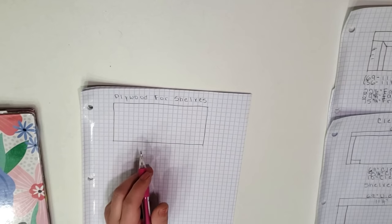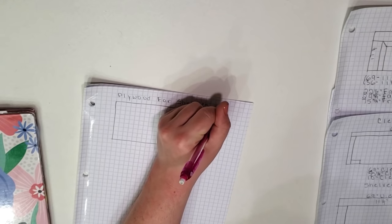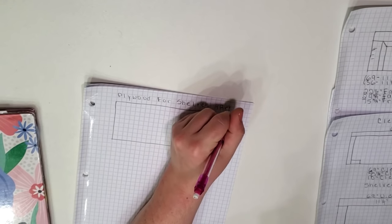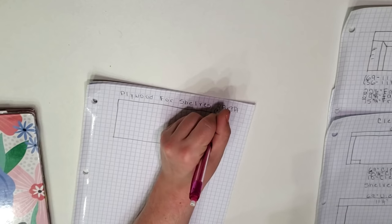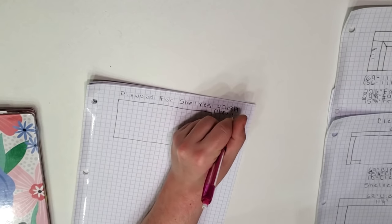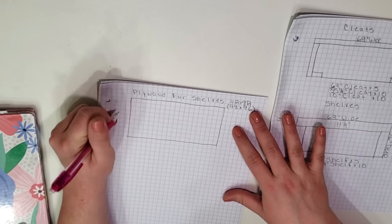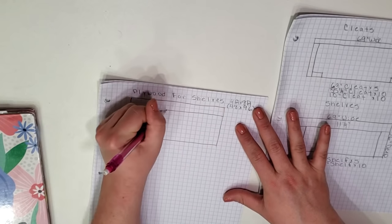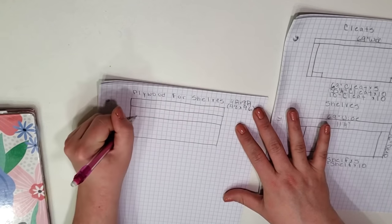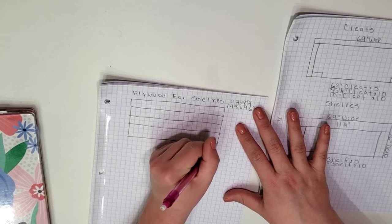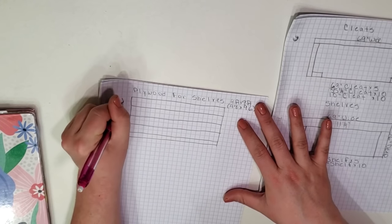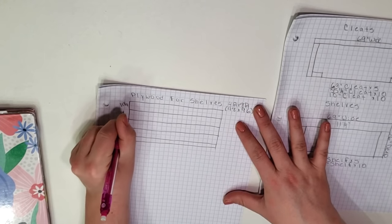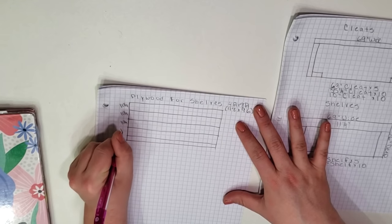At this point I have all of my dimensions figured out and need to determine how much wood I will need. With a sheet of plywood I can have it cut down at Home Depot to save me some time. I know I'll have them cut it lengthwise into 11 and a quarter inch wide strips so I need to figure out how many sheets I will need to complete all of my shelves.